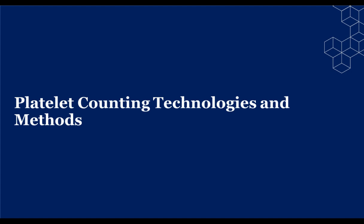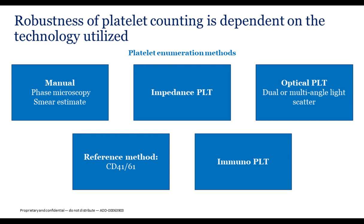Platelet counting technologies and methods include the following: manual phase microscopy and smear estimates, considered direct methods; impedance platelet counting, routinely used in the laboratory; and optical platelet counting, which includes dual optical angle light scatter, fluorescence, and multi-angle light scatter. The reference method by the ICSH — the International Council for Standards in Hematology — utilizes a monoclonal approach using CD41 and CD61, targeting the GP3A and GP2B sites on the platelet. There are also single-platform approaches using CD61 immunoplatelet counting.